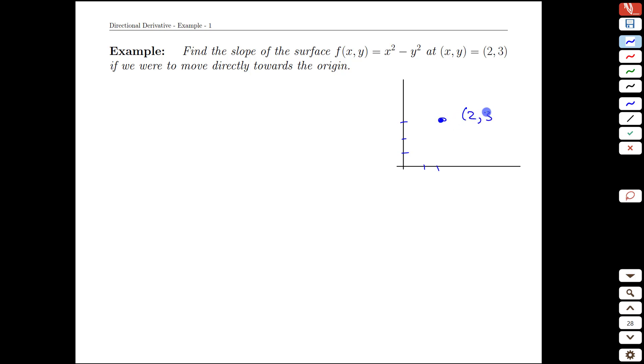So we're at the point (2,3) and there's a surface over top of this. This is our x direction and our y direction, and what we're going to do is move directly towards the origin, and so that would define a vector like this.